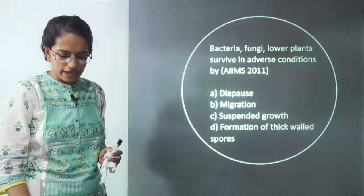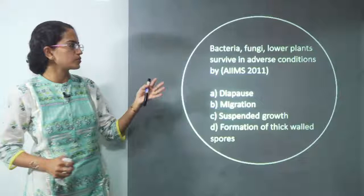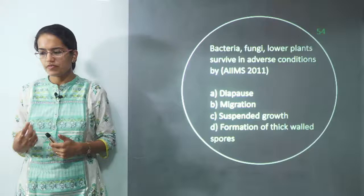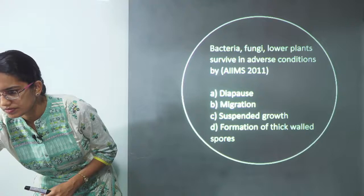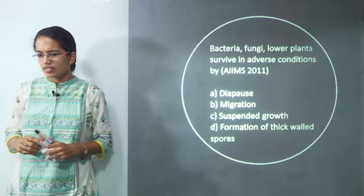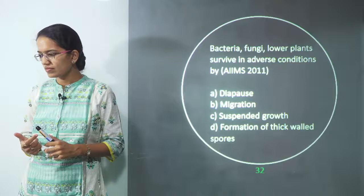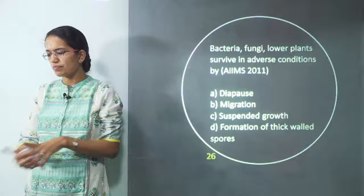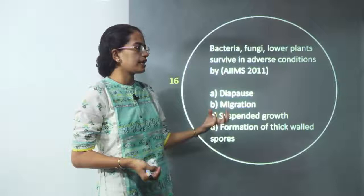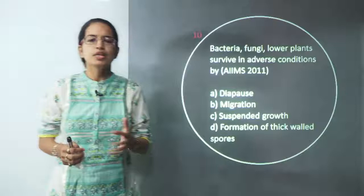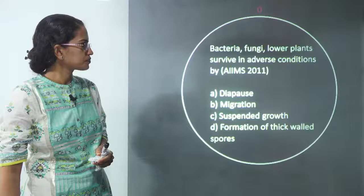The next question is a direct, simple question about bacteria, fungi, and lower plants. Siddham and Sangha have the correct answer. These organisms survive adverse conditions through formation of thick-walled spores. Bacteria, fungi, and lower plants all survive through this mechanism.